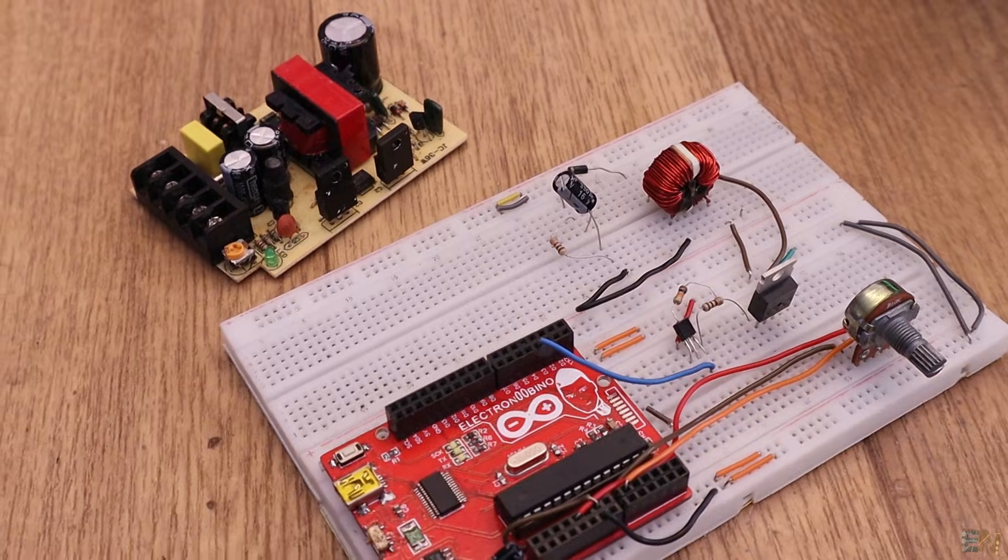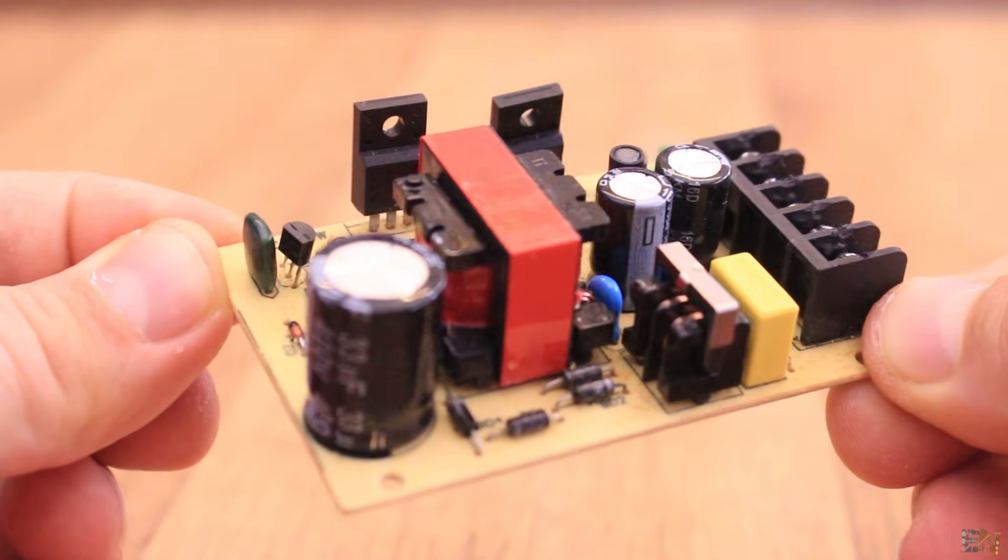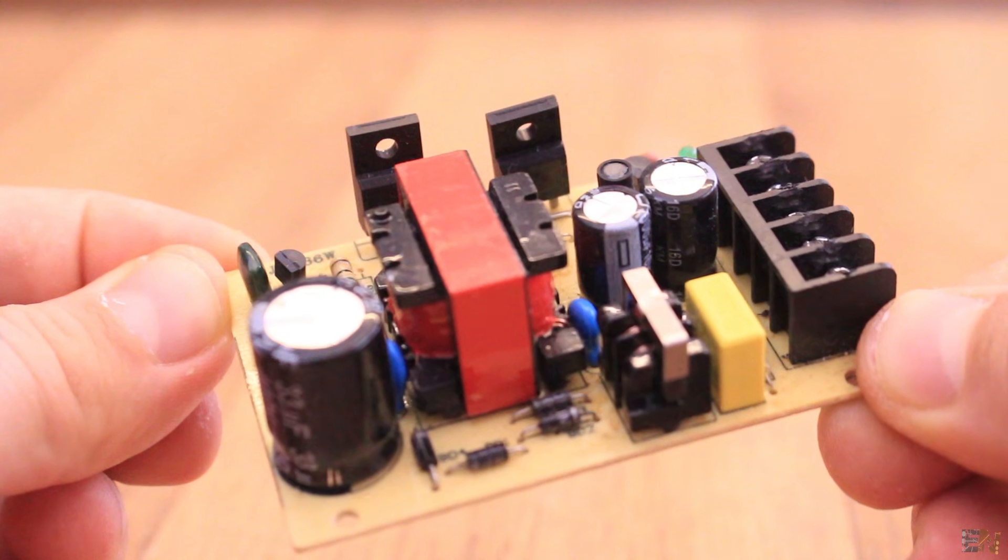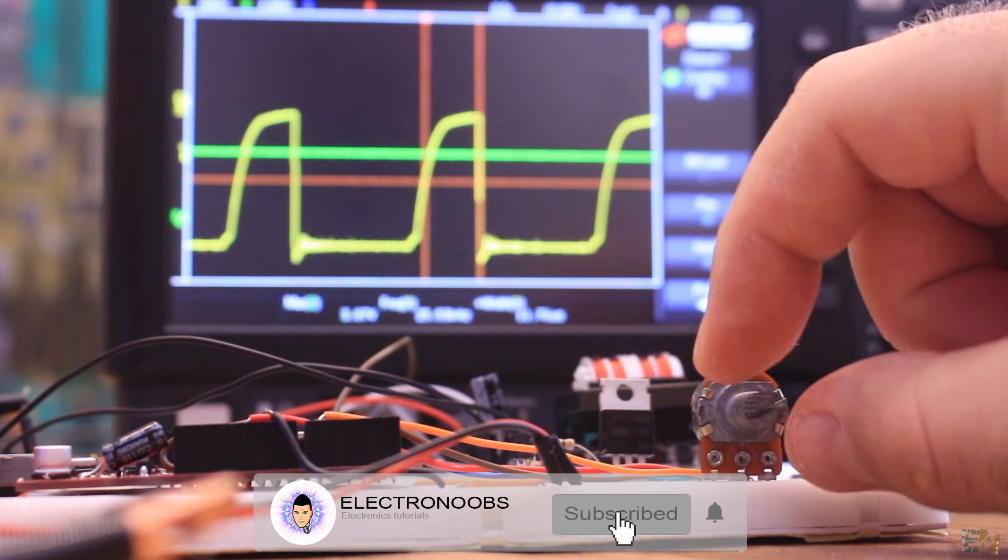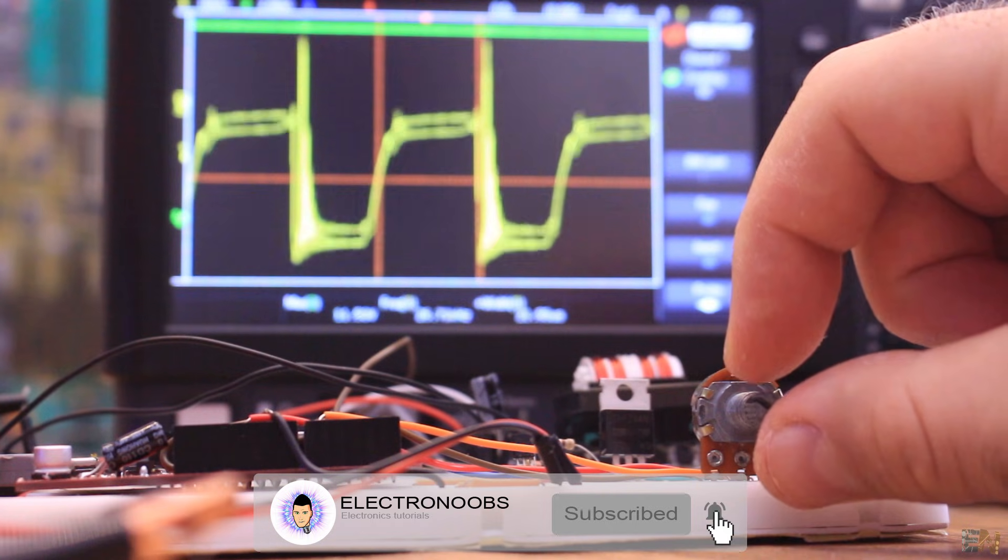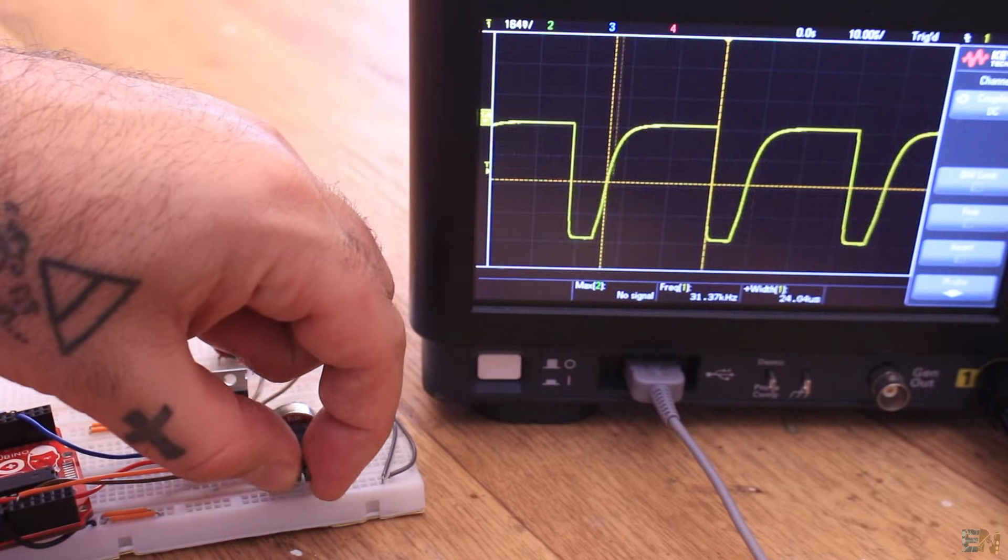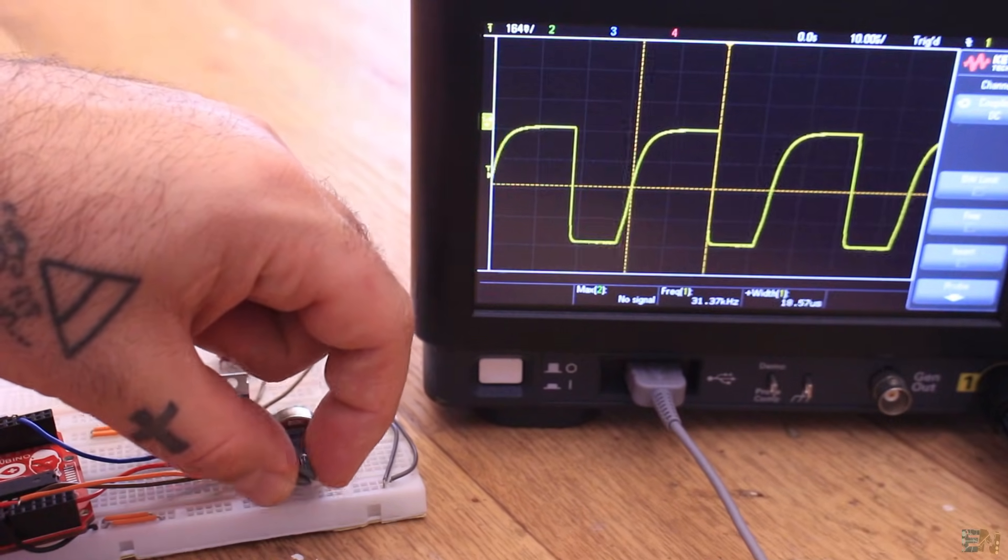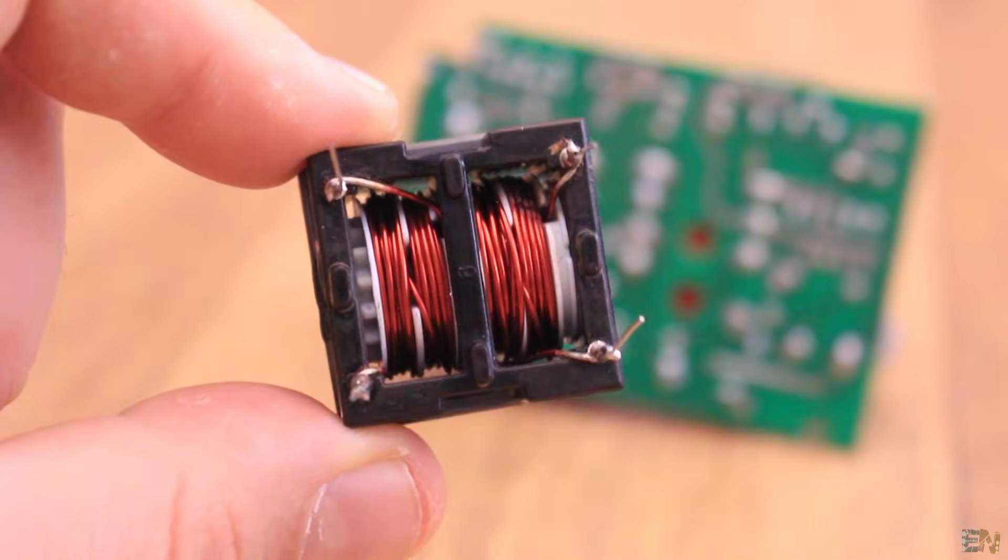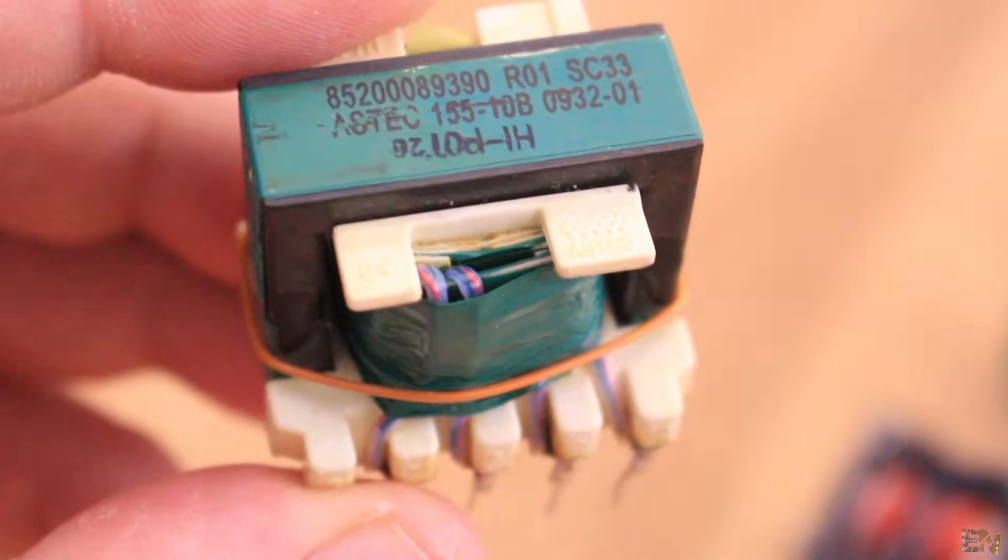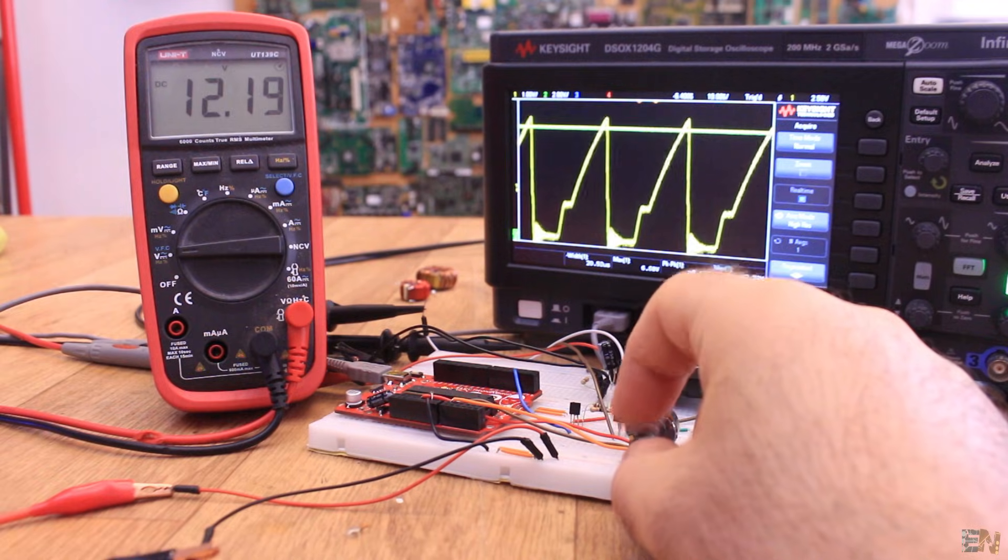So guys, that's how a flyback converter works. Be very careful if you work with high voltages like this small power supply because that could hurt you. Take a look at the links below for more information. You could also find the schematic I've used with the Arduino and the code that you need. I've also made the code and schematic with a feedback, so check that out as well. If you like this tutorial, consider subscribing and give a like to this video. Thank you very much for your support, to my patrons and to all my subscribers. Thanks again and see you later guys.